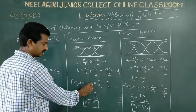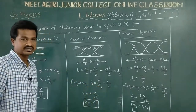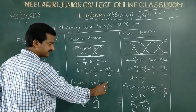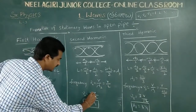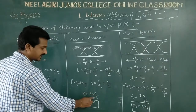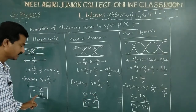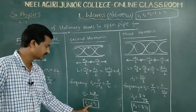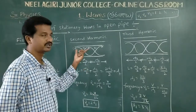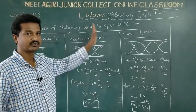So the second harmonic frequency ν₂ = V/λ₂, and since λ₂ = L, we get ν₂ = V/L. Multiplying numerator and denominator by 2 gives ν₂ = 2 × (V/2L). Since V/2L = ν₁, we get ν₂ = 2ν₁. This is the second harmonic frequency.